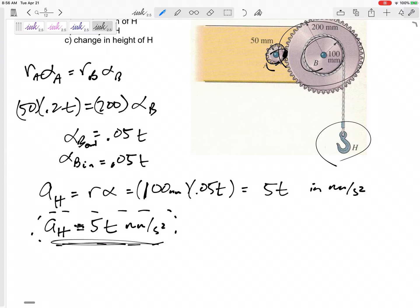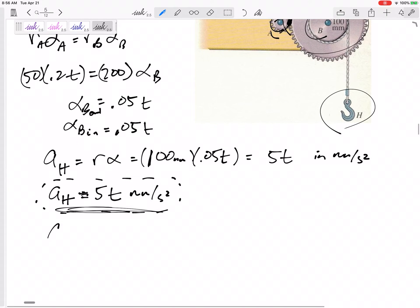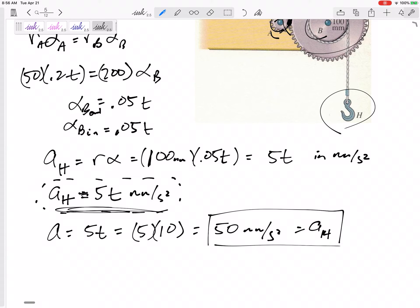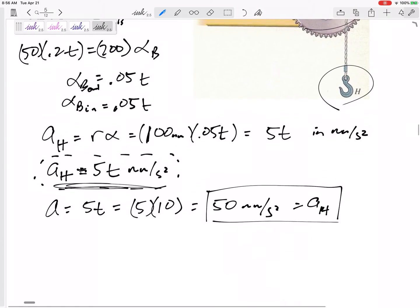I'm not going to use constant acceleration equations. That 5t is not constant. I'm going to use derivatives and integrals. Okay, if I'm given acceleration and asked for acceleration, do I need to do a derivative or an integral or nothing? I'm given acceleration is 5t, and so when t is 10, 50 millimeters per second squared is the acceleration of H after 10 seconds.